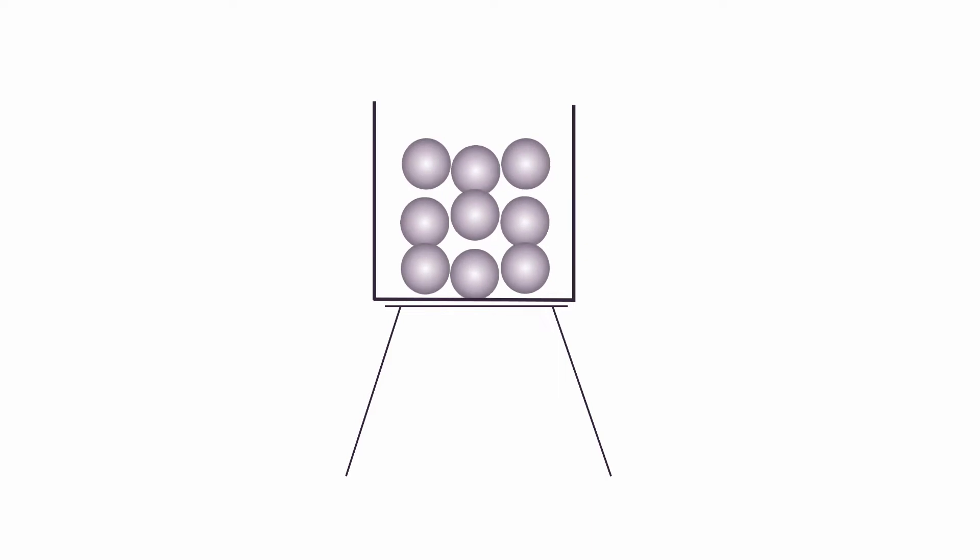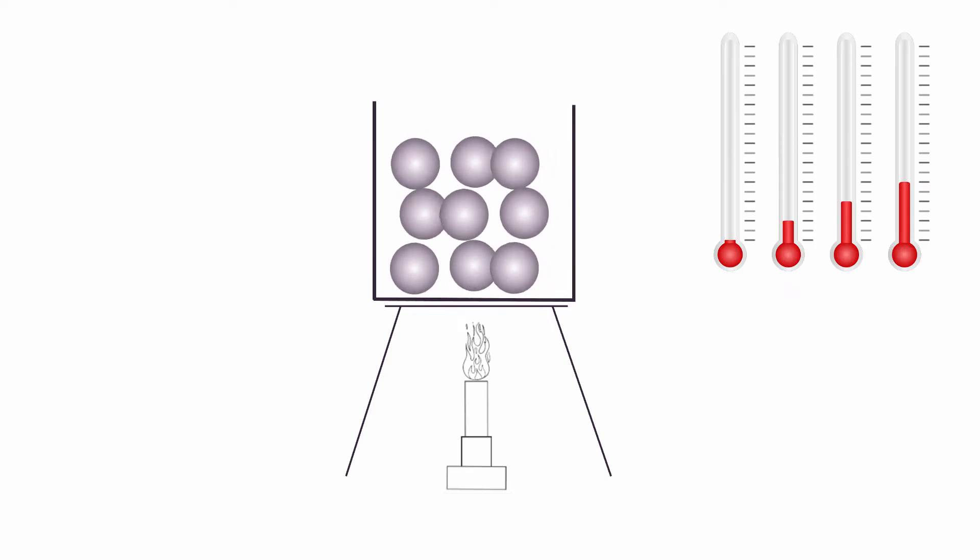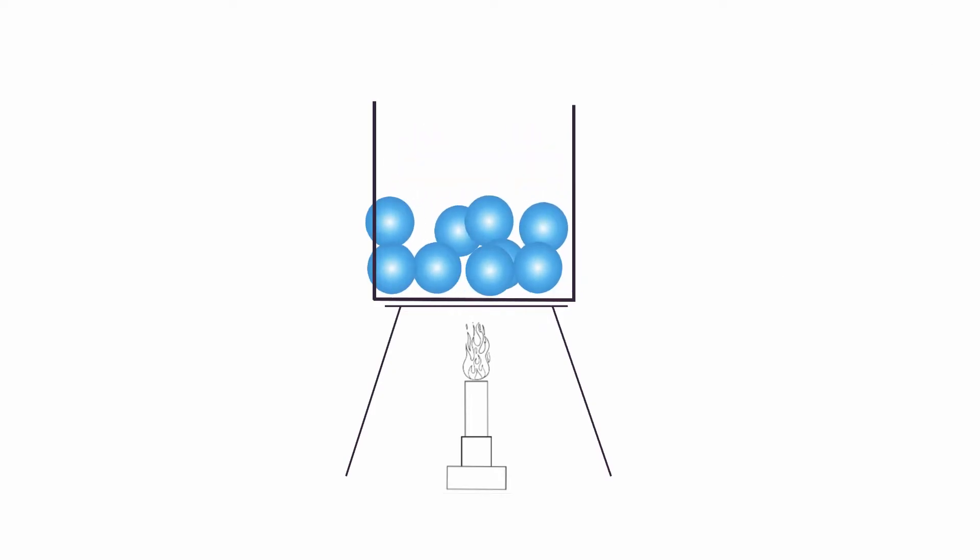If we add enough heat to a solid, the particles will begin to move around so much that they will no longer be in a fixed position or held in a fixed shape. At this point the substance becomes a liquid. The process of changing from a solid to a liquid is called melting.